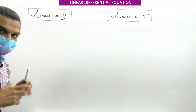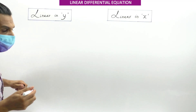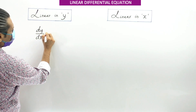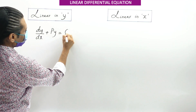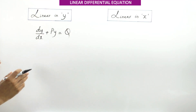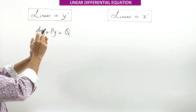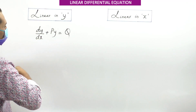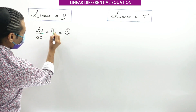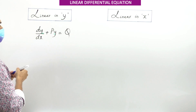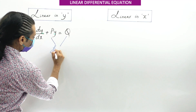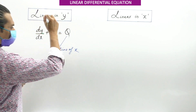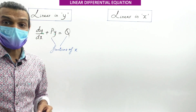The differential equation which is Linear in Y can be put in the form: DY/DX + PY = Q. This is the general form of a differential equation which is Linear in Y. Here both P and Q are functions of X — very important. Both P and Q are functions of X.